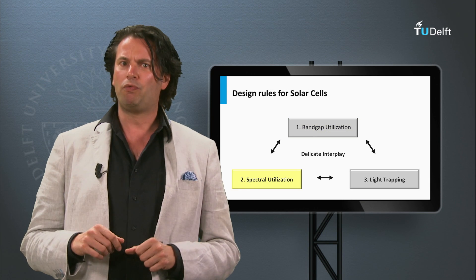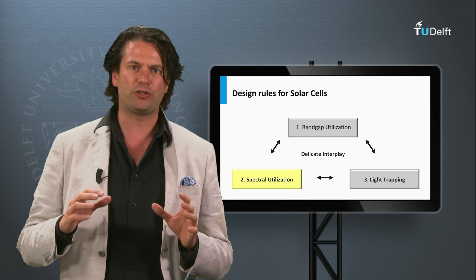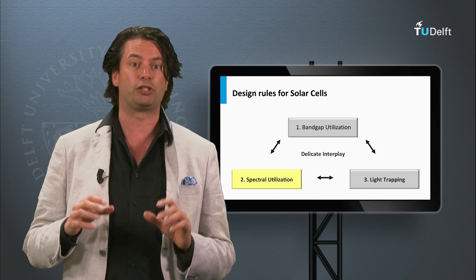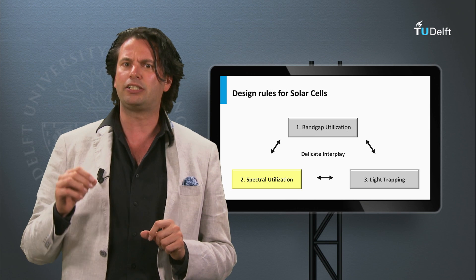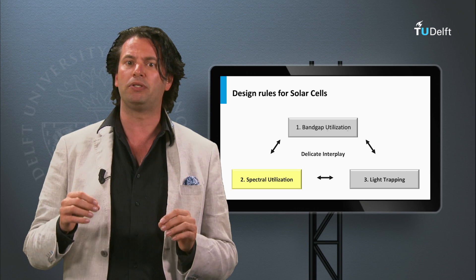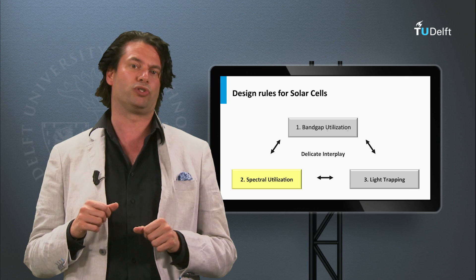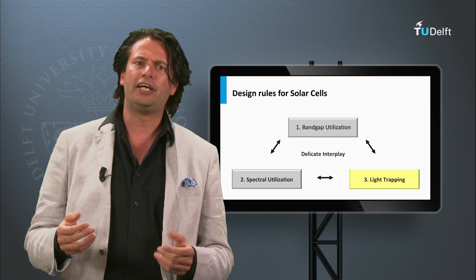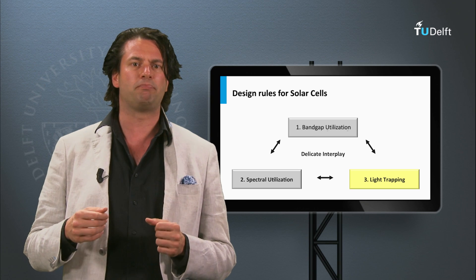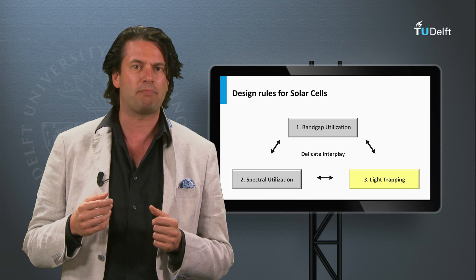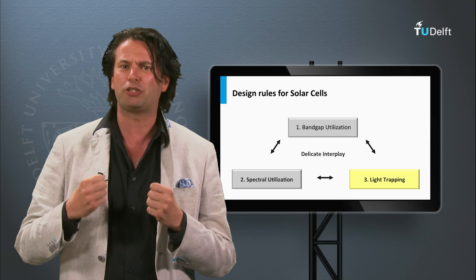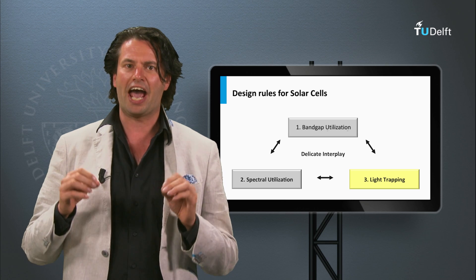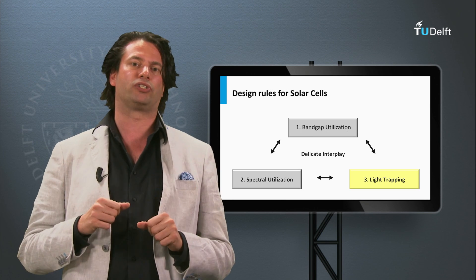Secondly, we look at the spectral utilization. The spectral utilization is first determined by the choice of materials which make the solar cell. We will discuss that the bandgap of the materials determines the maximum current density generated by the solar cell. Thirdly, if we have chosen our PV material, its potential utilization of the solar spectrum and its utilization of the bandgap energy, we would like to absorb as much light as possible from the solar spectrum in the PV active materials. We have to implement tricks to trap the light in the solar cell.